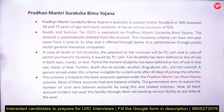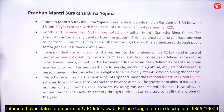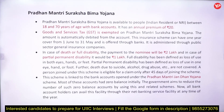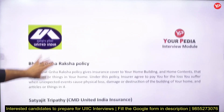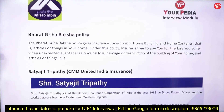Pradhan Mantri Suraksha Bhima Yojana requires an annual premium of only 20 rupees, you need a bank account, GST is not applicable, and in case of death or full disability you get 2 lakh rupees, while partial disability gives 1 lakh rupees. Pradhan Mantri Jan Dhan Yojana links bank accounts to all these schemes so you receive the benefit of government schemes. Bharat Griha Raksha Yojana is related to home insurance — protecting your home building and its contents from unexpected losses and various kinds of damages or devastations.